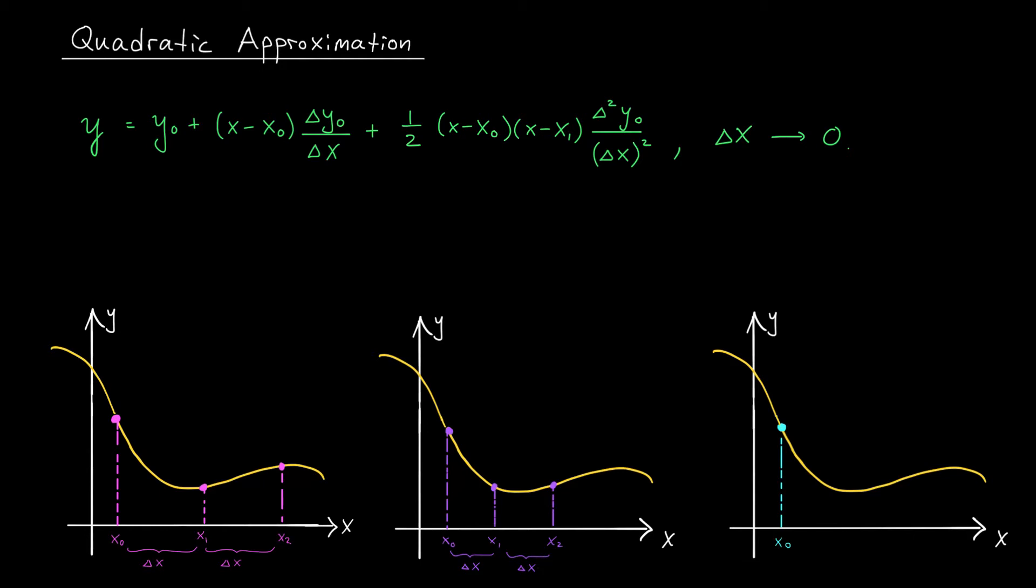Of course, now using just two points is not enough. To determine the equation of a parabola, I'm going to need three points. So that's what I have, three points: my target point, x_0, and then two other points, x_1 and x_2,